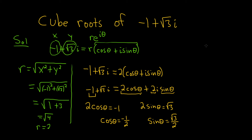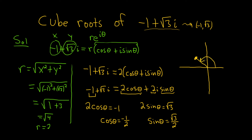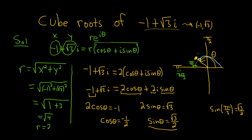Let's do a rough sketch on the complex plane to figure out the angle. Our complex number negative 1 plus square root of 3 i can be thought of as the ordered pair negative 1 comma square root of 3, which is in quadrant 2. On the unit circle, sine of pi over 3 equals square root of 3 over 2, so the reference angle is pi over 3. That green reference angle is pi over 3.